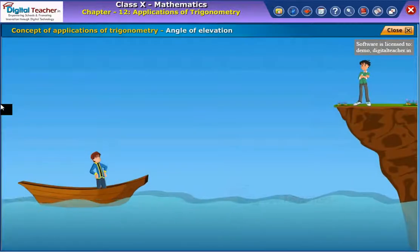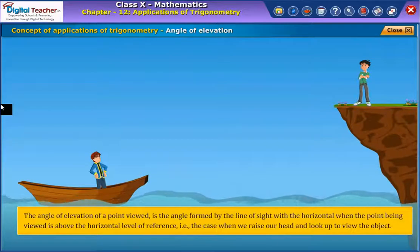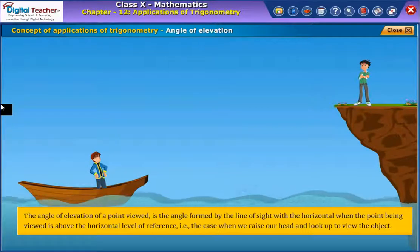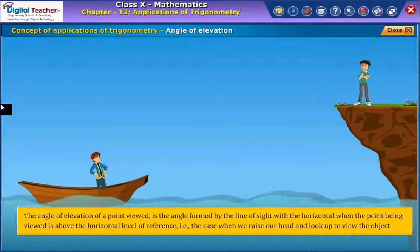Let us learn about the term angle of elevation. The angle of elevation of a point viewed is the angle formed by the line of sight with the horizontal when the point being viewed is above the horizontal level of reference. That is the case when we raise our head and look up to view the object.